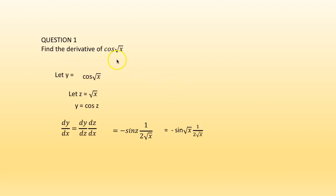Question 1: find the derivative of cos(√x). Let y = cos(√x). Let z = √x, so y = cos(z). Then dy/dx = dy/dz · dz/dx. dy/dz is −sin(z), and dz/dx is 1/(2√x). Substituting z = √x, we get −sin(√x) · 1/(2√x).